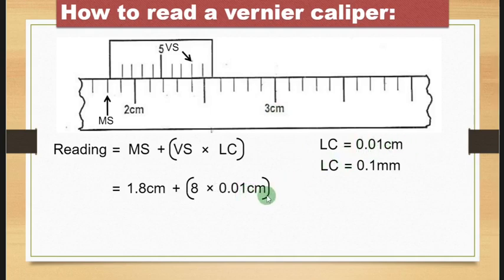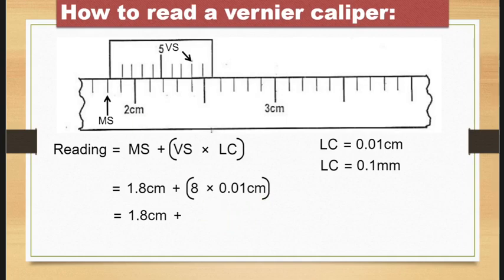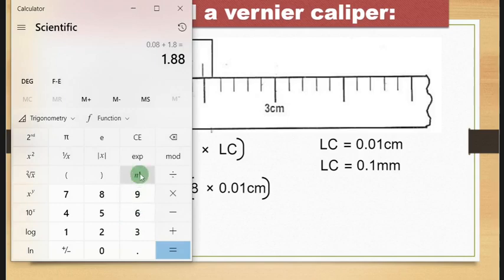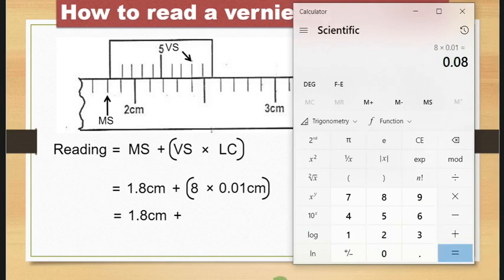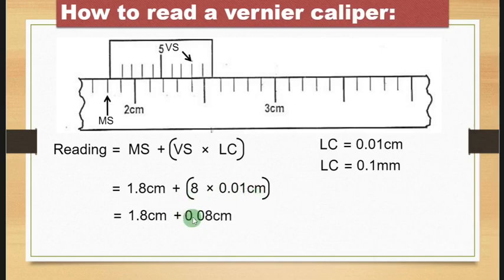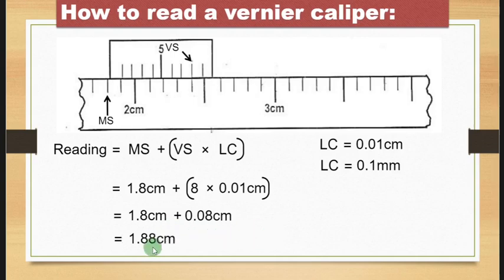Then you set times the least count. Since this is in centimeters, you pick 0.01 cm. So: 1.8 cm + (8 × 0.01 cm). Evaluating the bracket first: 8 × 0.01 = 0.08 cm. Then: 1.8 cm + 0.08 cm = 1.88 cm. So the final reading on this Vernier caliper is 1.88 centimeters.